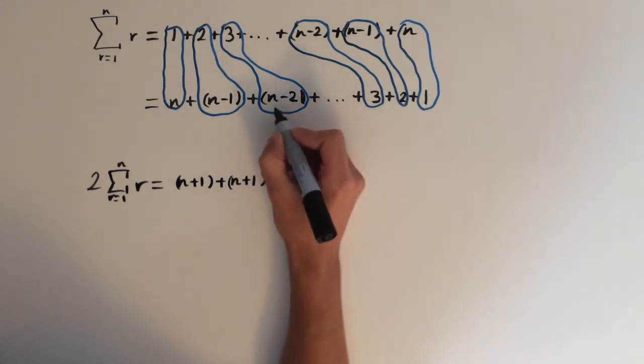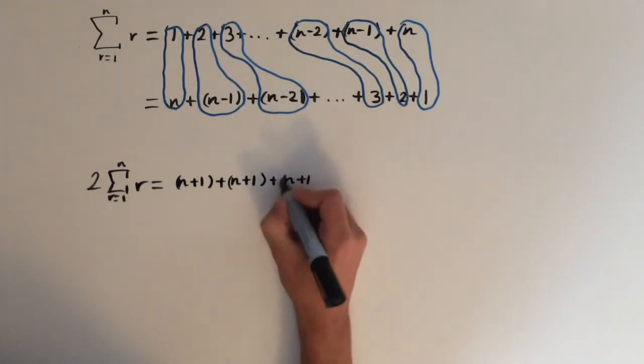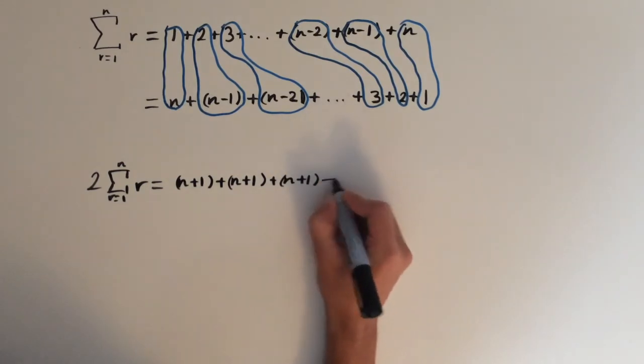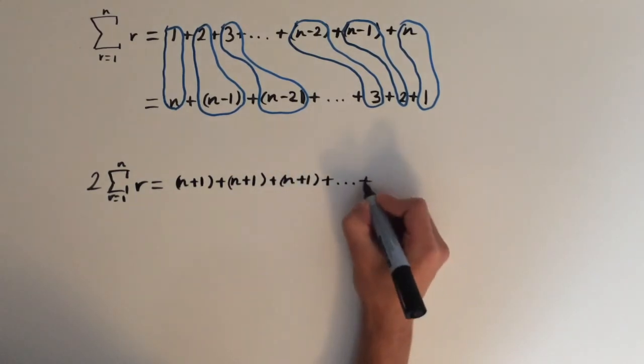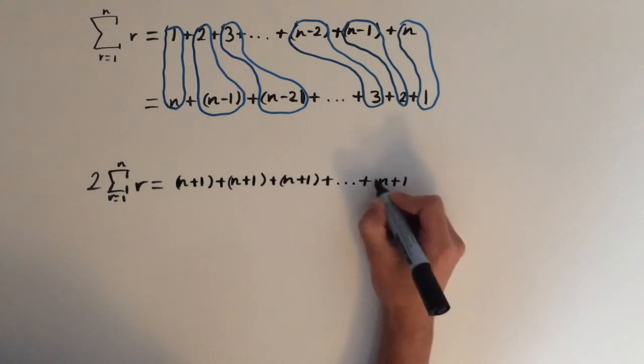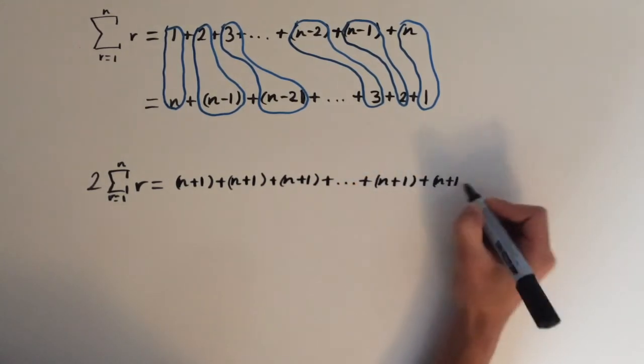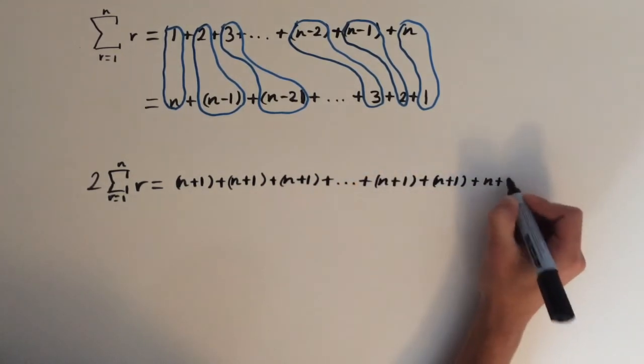Third term, n minus 2 plus 3, also n plus 1. You can see how the pattern goes on for every single term in this series. I'll just write out the last three: n plus 1.